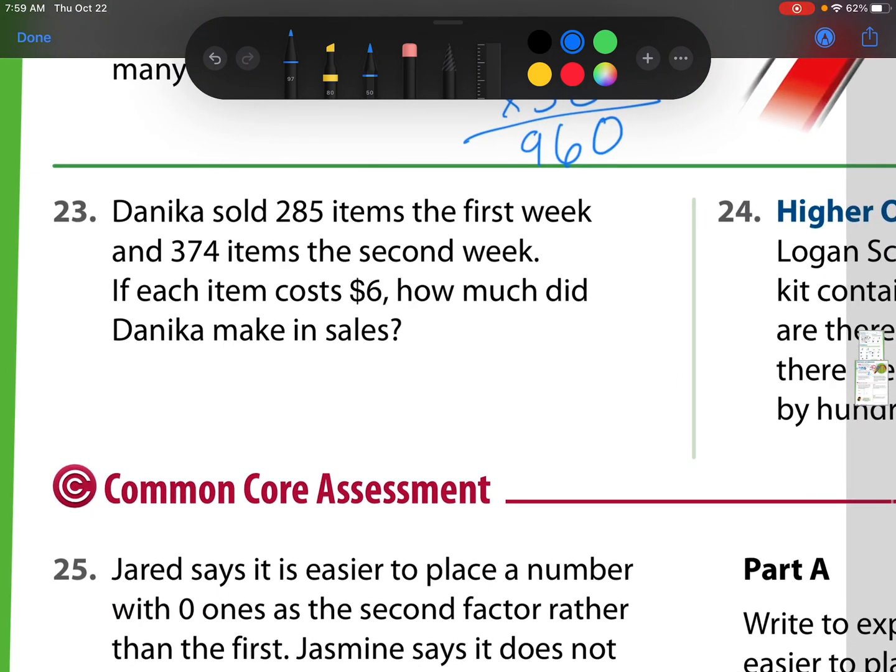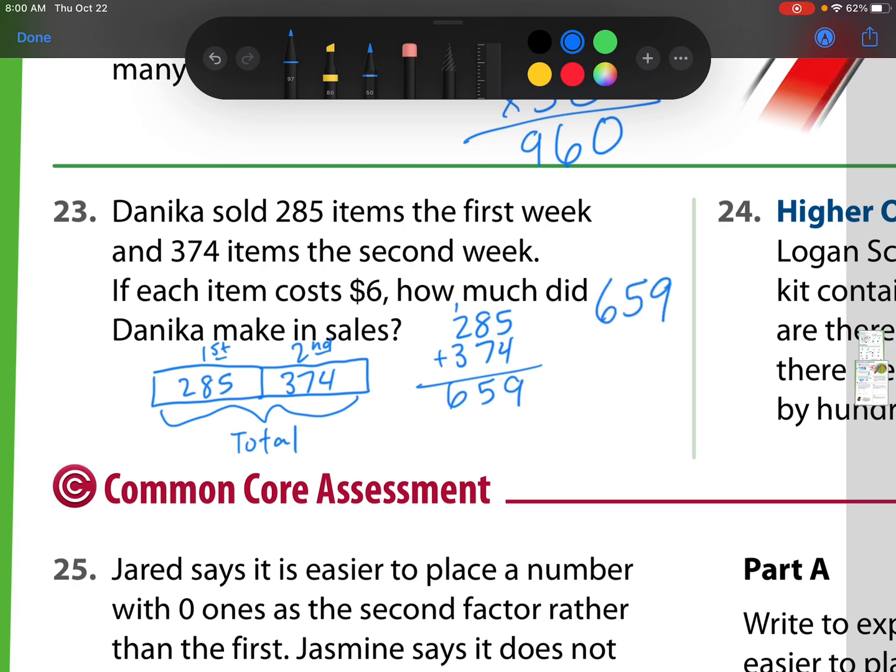Number 23, Danica sold 285 items the first week, and 374 items the second week. If each item cost $6, how much did Danica make in sales? Well, we have these two different things. We have 285, and we have 374. So what we need to do is we need to figure out the total amount that she sold. So this was that first week. This was the second week. So what was the total amount that she sold? Well, I have to add these two. So let's add them. We have 285 plus 374. So I will get 659 items total. Now, what do we need to do with that? Well, we have 659, and they cost $6 each. So I have 659 groups of $6. And that is a multiplication problem.